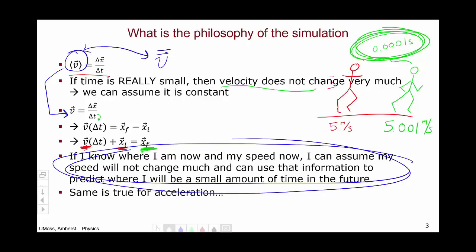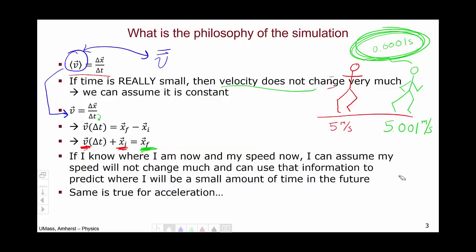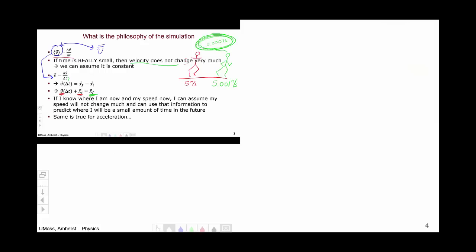The same philosophy holds true for acceleration. I could have repeated the entire series of steps with acceleration. So if I'm looking at a very small time interval now, let's start with the definition of acceleration. That's delta V over delta T. And if I'm thinking about a very small time interval, then the average acceleration is going to be the acceleration. The acceleration is not going to change very much as long as this delta T is really, really small.